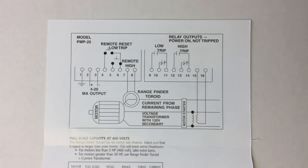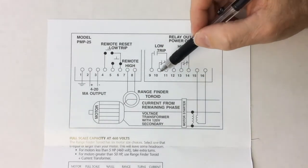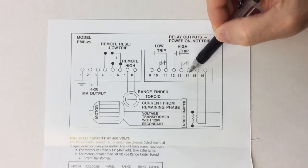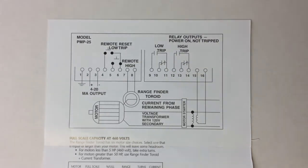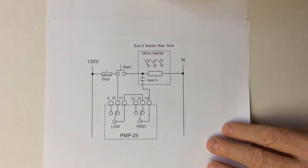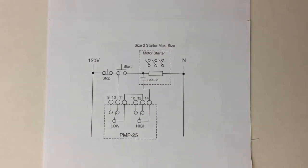In a typical application, the normally closed relay contacts for both high and low are wired in series with a motor starter stop circuit. This diagram shows the PMP25 high and low closed contacts wired in series with the sealant contact of a motor starter.